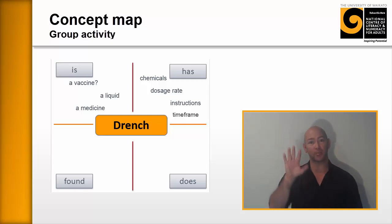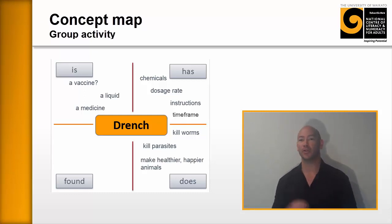And then we might jump quickly to the third quadrant, which would be drench does kill worms or kill the intended parasite. Drench does make happier animals. Drench does and so on and so on. There'll be other things in there.